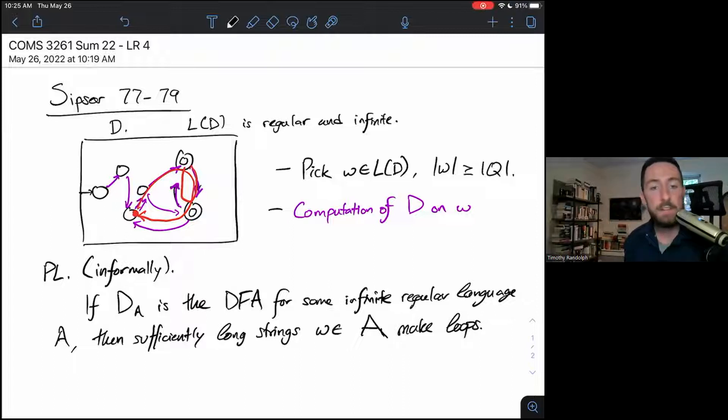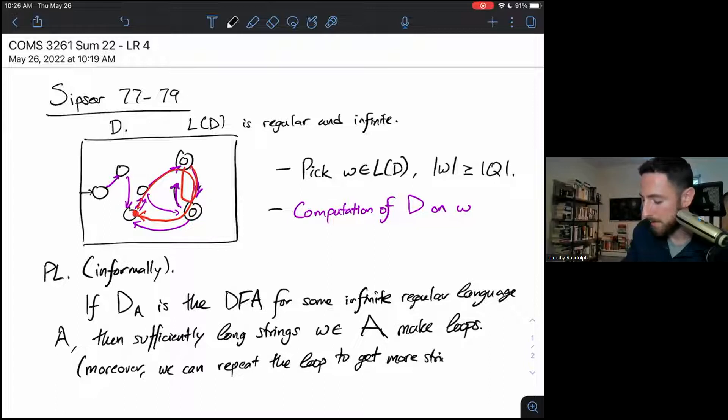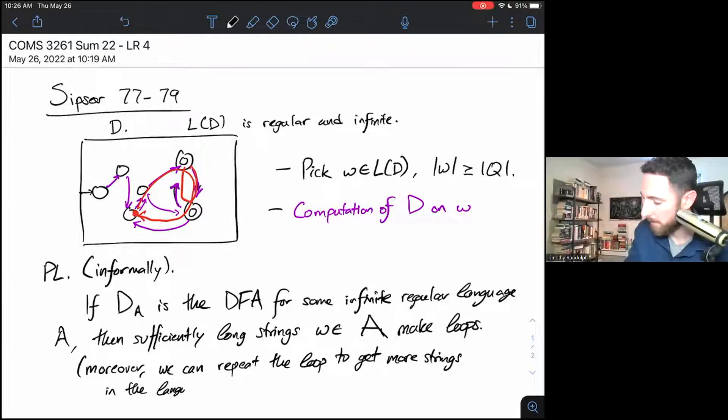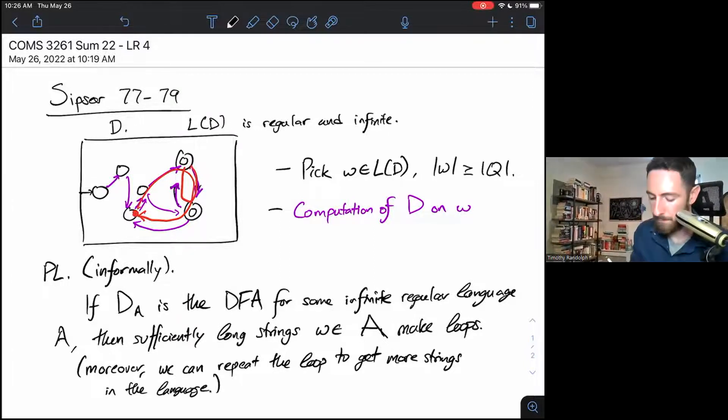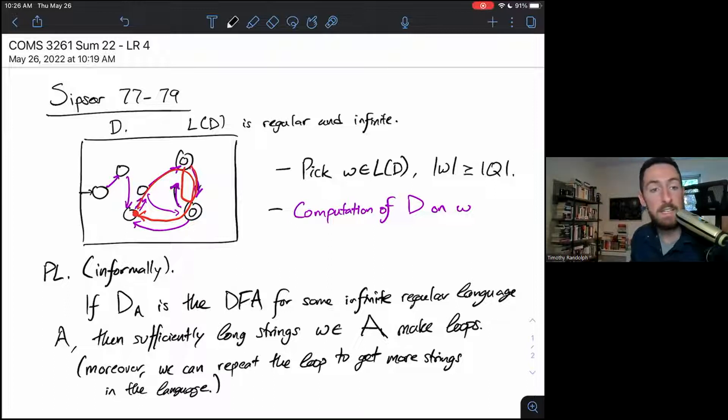If DFAs for infinite, regular languages accept sufficiently long strings, those long strings have to make loops. And I'll also say, moreover, we can repeat the loop to get more strings in the language.